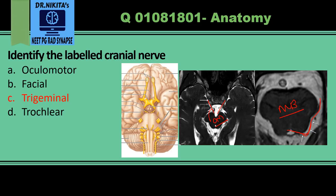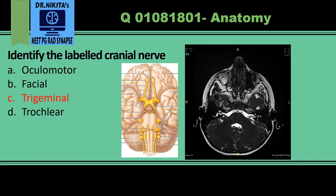The trochlear nerve crosses to the opposite side. Next is the facial nerve. The vestibulocochlear and facial nerve — the seventh-eighth nerve complex — arise at the pontomedullary junction in the cerebellopontine angle. Here we have the pons, the fourth ventricle, and the cerebellum. These nerves come and go into the internal auditory canal — that is the seventh-eighth nerve in the cerebellopontine angle.